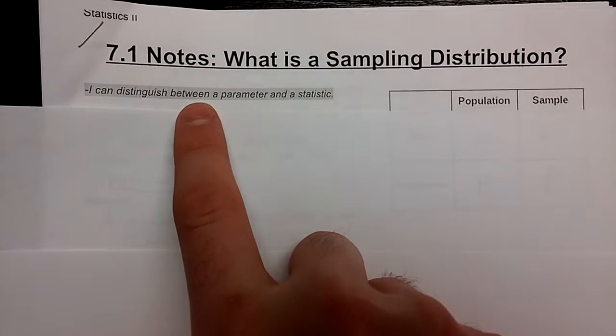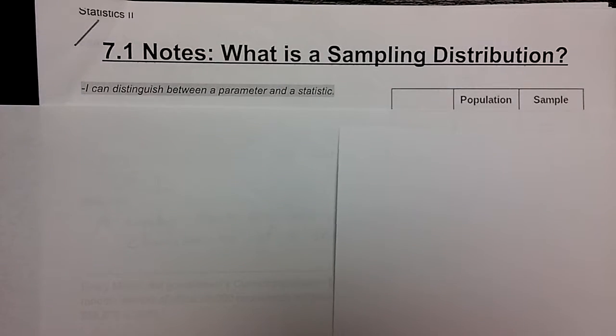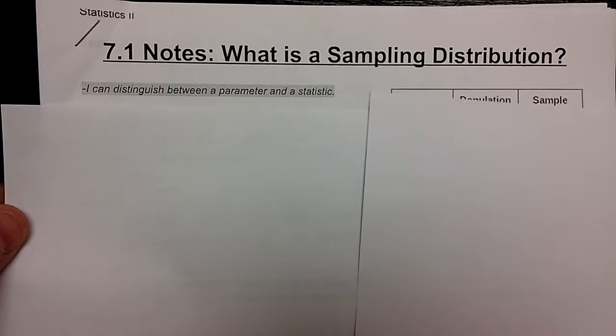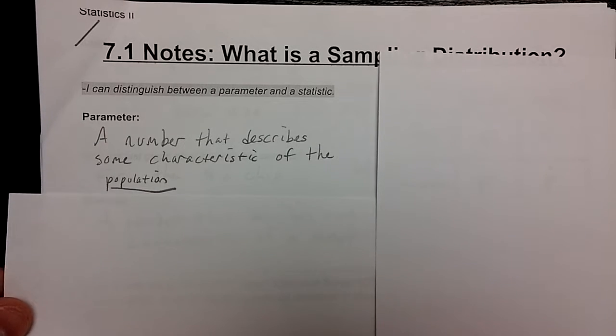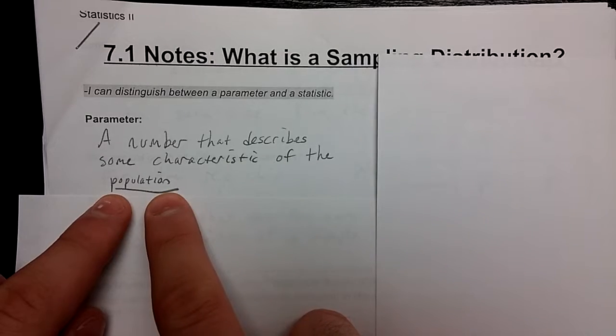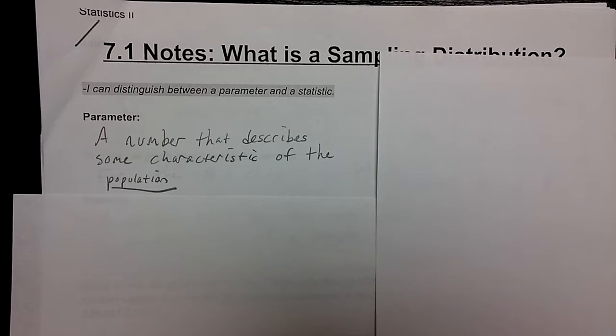First thing, we're going to distinguish between what's called a parameter and a statistic. They are similar, but the one difference is that they describe different groups of items or objects or people. A parameter is a number that describes some characteristic of the entire population. If you had every single person in the state of Michigan and you found out all of their heights and found the mean height, that would be your mu of the entire population. That would be a parameter.